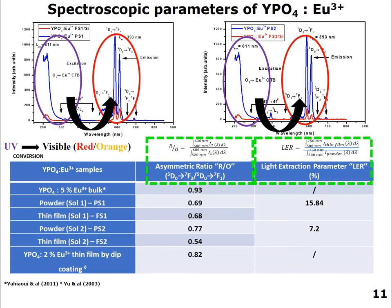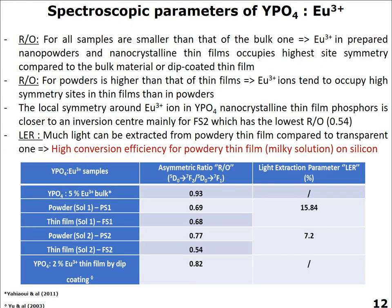As we can see, yttrium orthophosphate doped with europium can be a good material for light conversion from the UV region to the red-orange visible region. We calculated some spectroscopic parameters using mathematical formulas, mainly for the asymmetric ratio and light extraction ratio. We found that for powders, we can have a higher asymmetric ratio than that of the thin films, which indicates that europium ions tend to occupy higher symmetry sites in thin films than in powders.